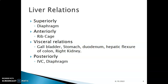The liver has two surfaces: a diaphragmatic surface and a visceral surface. The diaphragmatic surface is where you find the diaphragm, and on the visceral surface you have various viscera that form the relations of the liver — the gallbladder, the duodenum, the hepatic flexure of the colon, and the right kidney. These form the visceral relations of the liver.